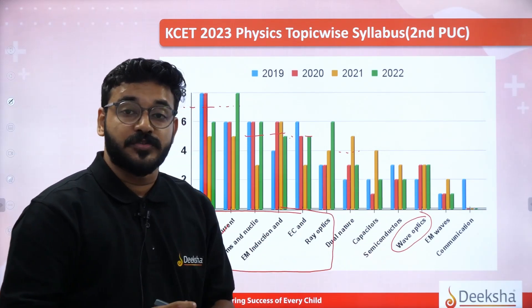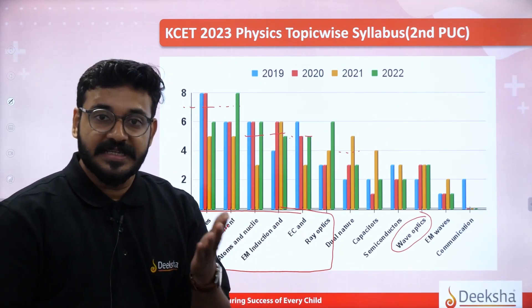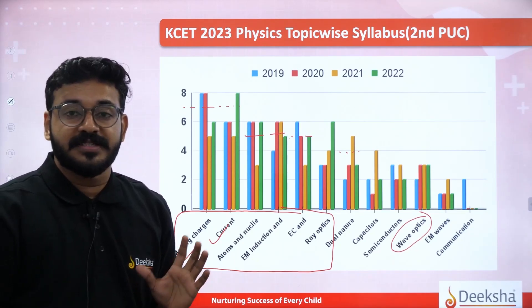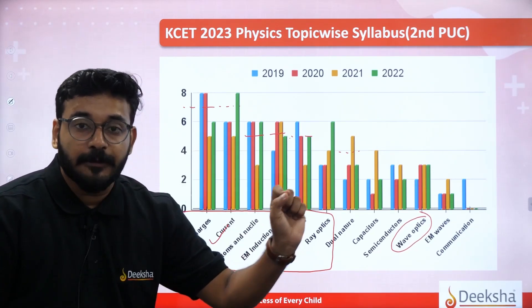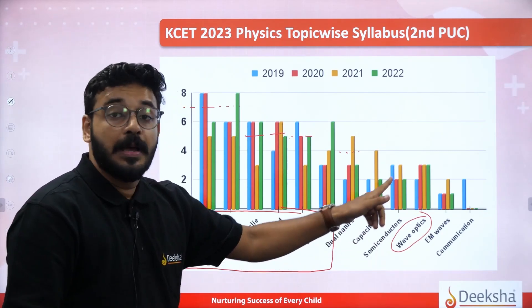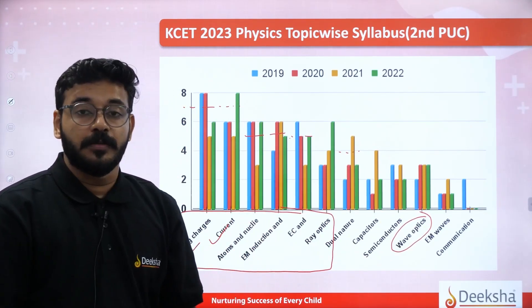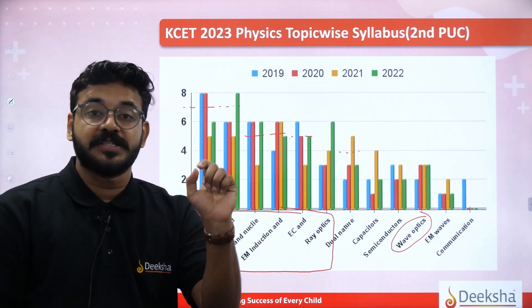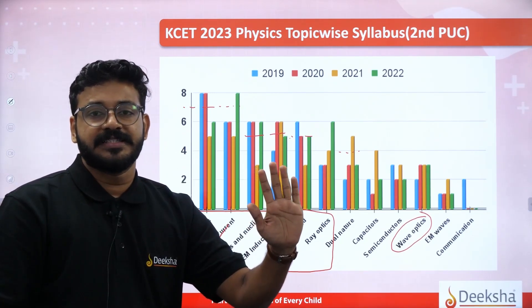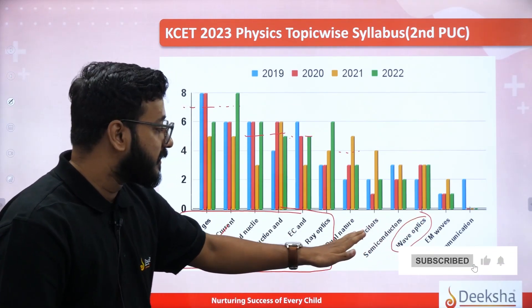Capacitors and semiconductors — this is a big scoring chance. Capacitors are easy to score: limited number of formulas and concepts, so practice and you will get short marks. Semiconductors have too many theory questions — mainly theory, not numericals. The semiconductor chapter is a bit heavy, but you can easily score if you prepare it well.